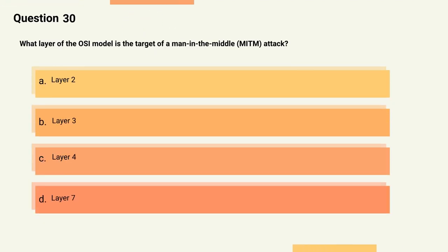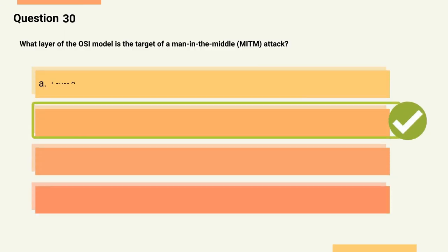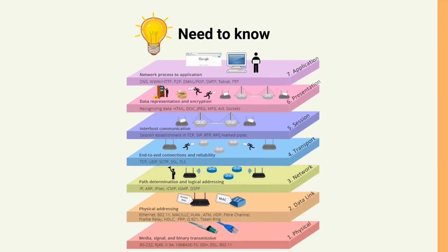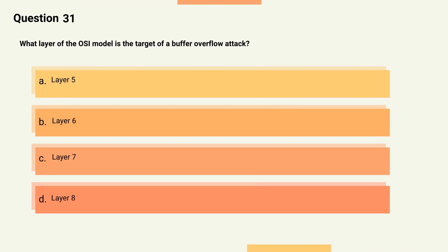Question 30: What layer of the OSI model is the target of a man-in-the-middle (MITM) attack? Options: A) Layer 2, B) Layer 3, C) Layer 4, D) Layer 7. The correct answer is Option B, Layer 3. Explanation: A MITM attack is a type of attack that targets the network layer, Layer 3, of the OSI model by intercepting and modifying network traffic between two communicating hosts.